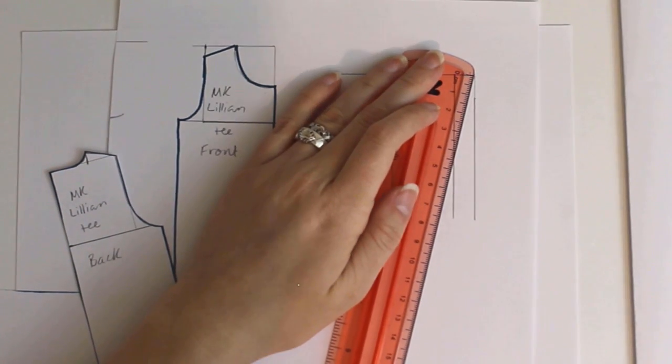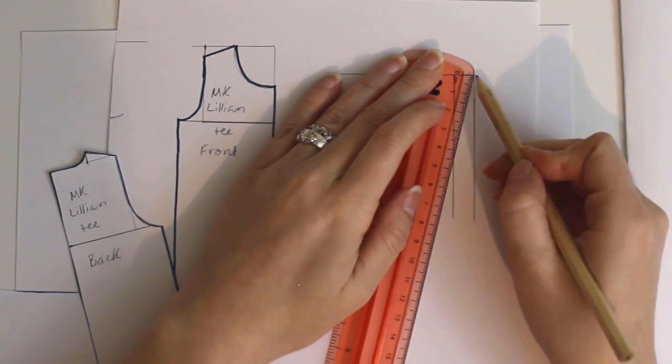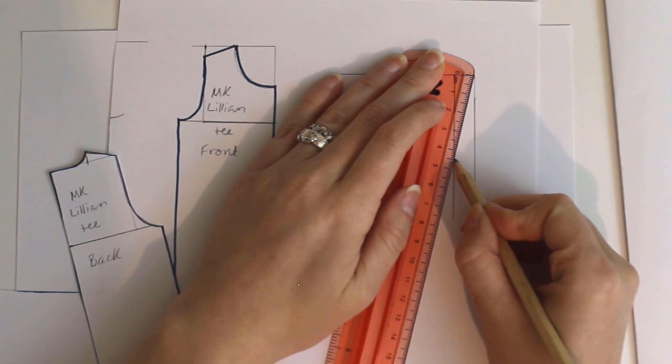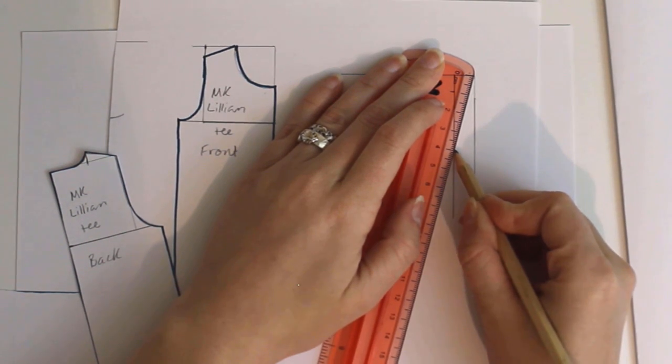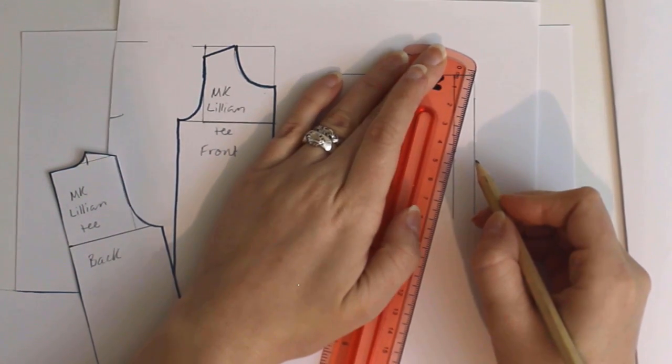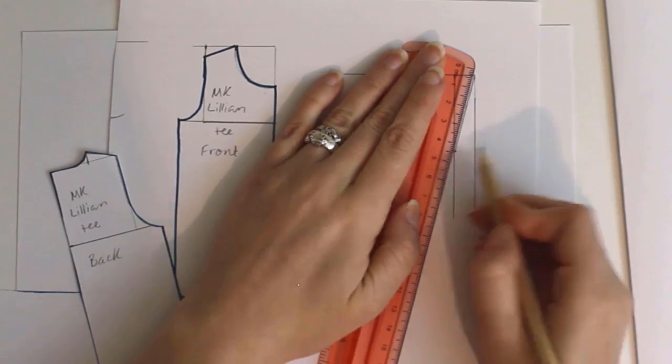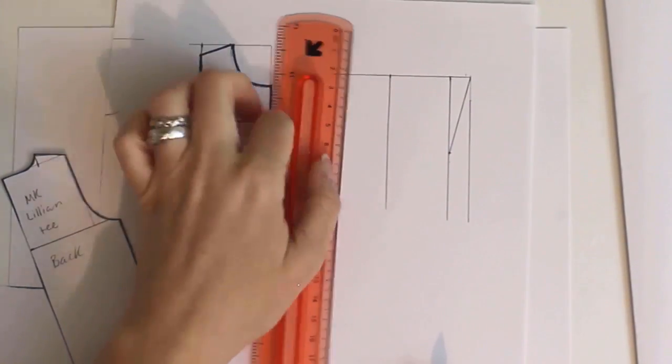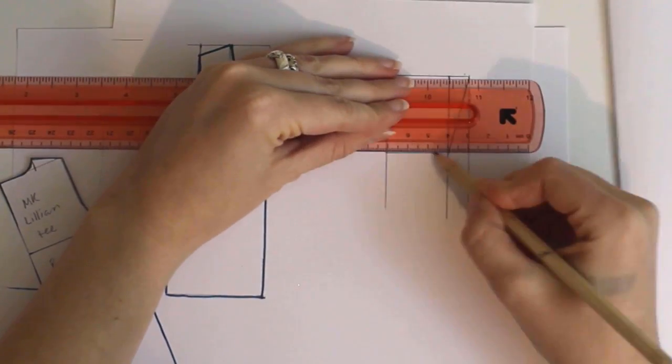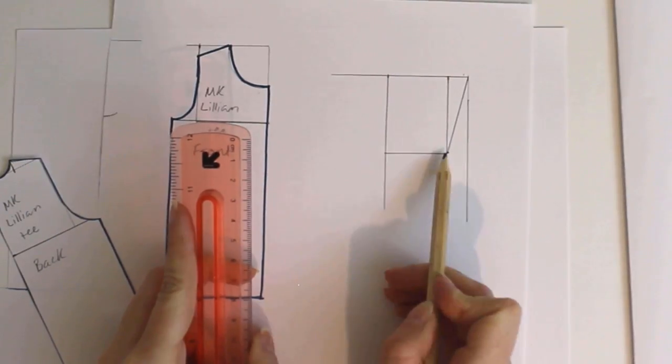Instead of marking your sleeve width on the side line, begin at the corner and measure at a diagonal down to the second line. You'll mark this with half your sleeve width. For me, that's 4 centimeters. So I draw an angled, 4 centimeter line to connect these two lines. Then I close the side of the sleeve. If you want to taper the bottom of your sleeve, you can.